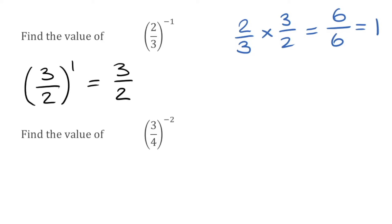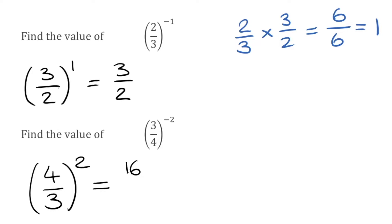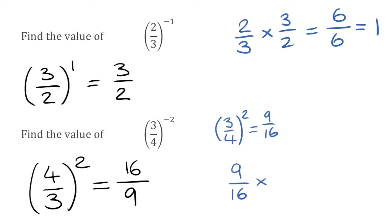For this next question, I've got 3 quarters to the power of negative 2. Because we see a negative and we have a fraction, all we do is flip it and apply the positive indice. So 3 over 4 becomes 4 over 3 to the power of positive 2. Now we square the fraction: 4 squared is 16, over 3 squared which is 9. We can check: 3 quarters squared is 9 over 16, and 9 over 16 multiplied by 16 over 9 gives 144 over 144, which equals 1.